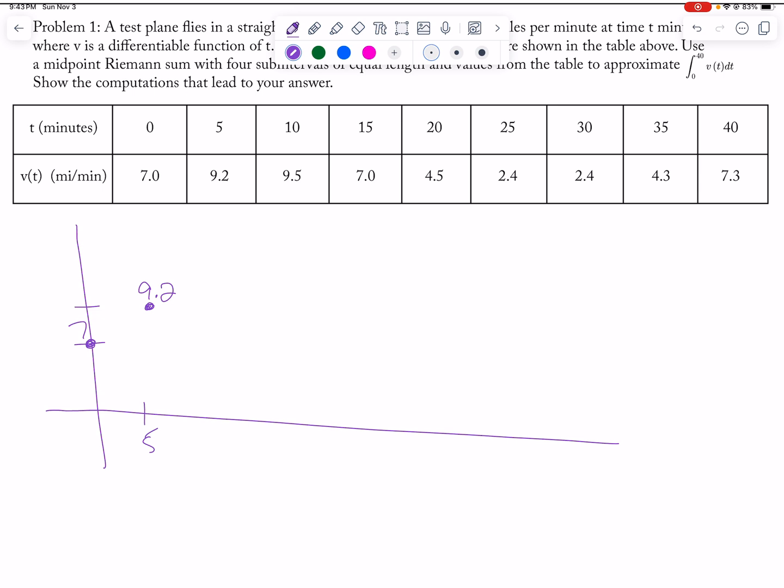Here's 9.5, back down to 7, 4.5, 2.4, 30, 2.4, 35, 4.3, and then 40. I'm not as concerned either about the exact location of the numbers, as much as I'm concerned about you guys setting up MRAM, right?